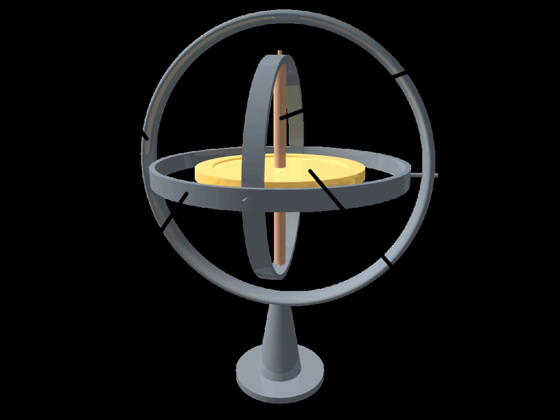Applications of gyroscopes include inertial navigation systems, such as in the Hubble telescope, or inside the steel hull of a submerged submarine. Due to their precision, gyroscopes are also used in gyrotheodolites to maintain direction in tunnel mining.